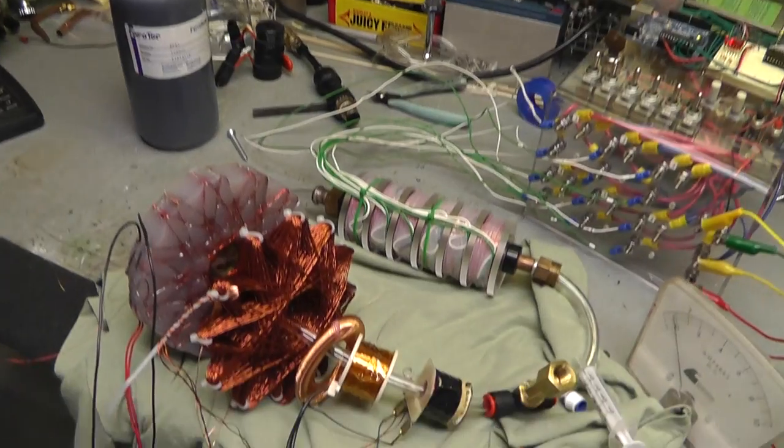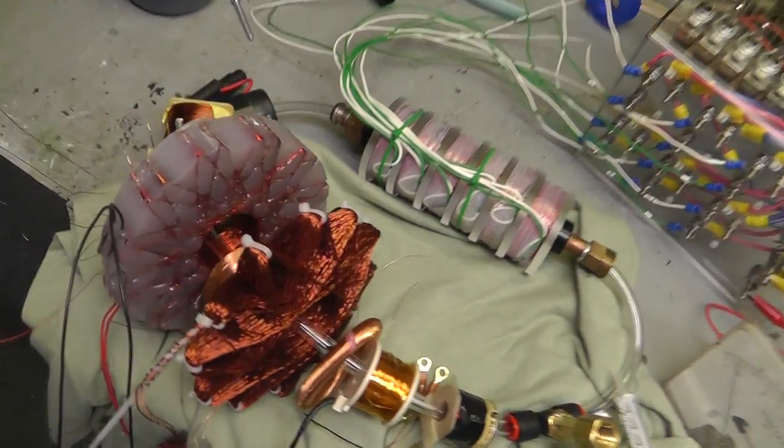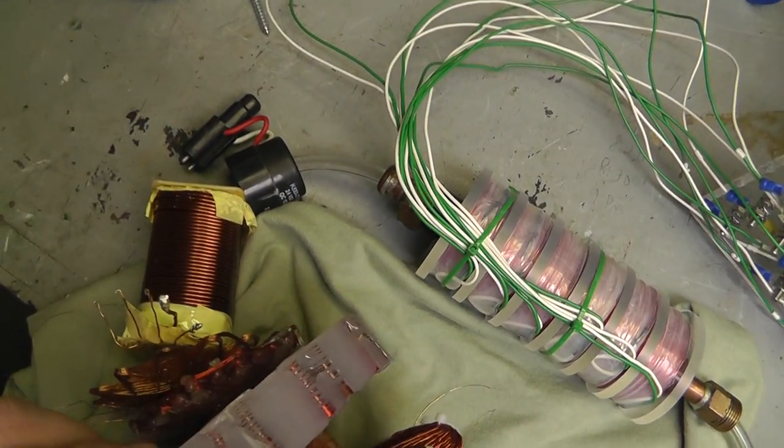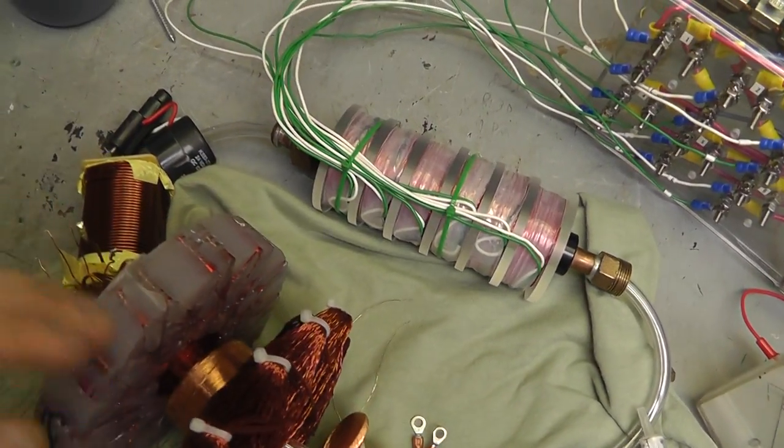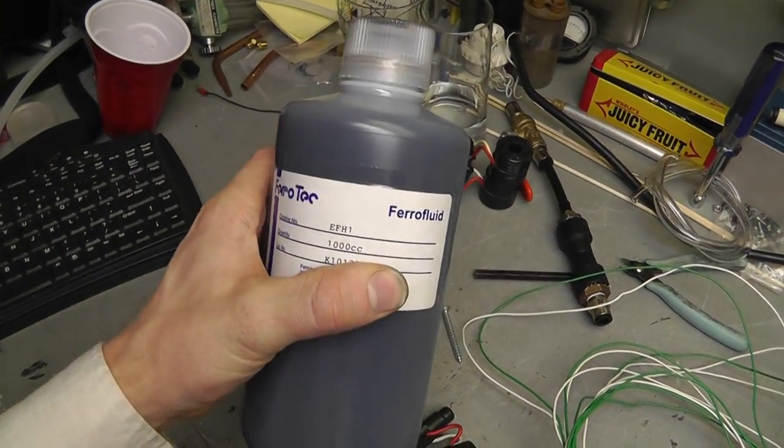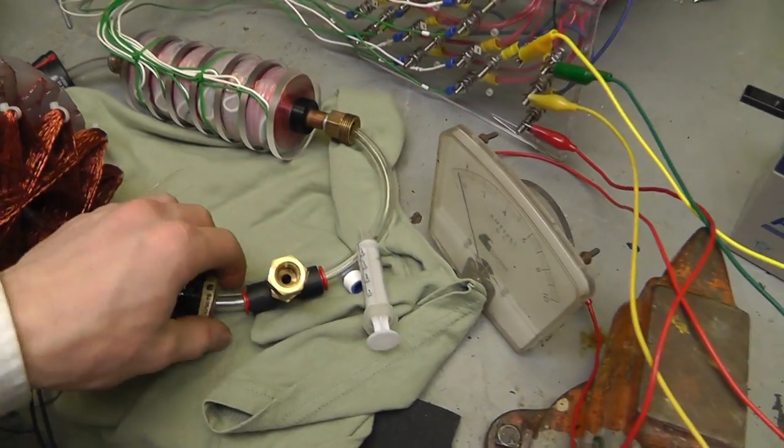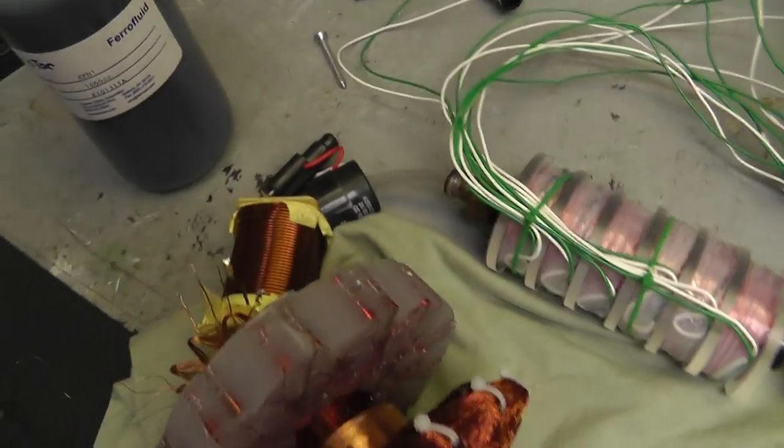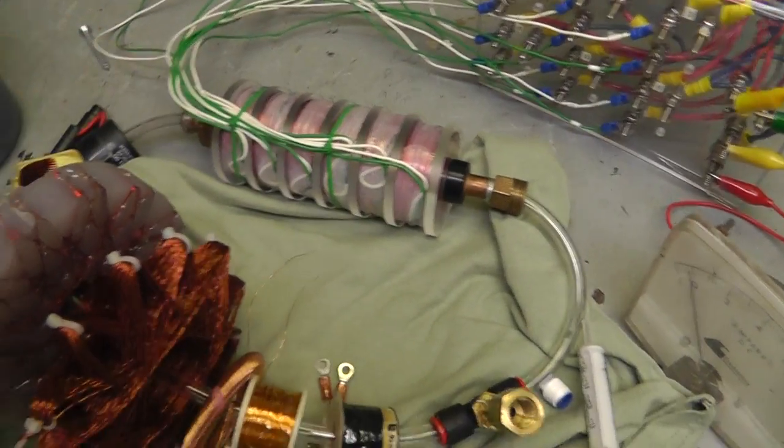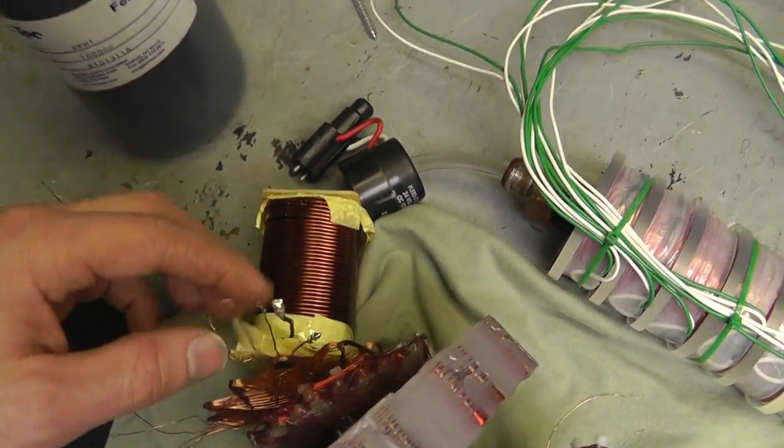Alright, so what's up everybody. This crazy contraption right here is a simple test for the ferrofluid I've got. This pipe, 3/8 tube, is going through the center of my primary and I've got all these different random coils on it.